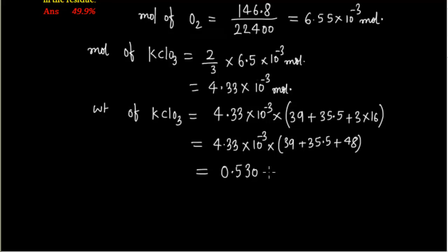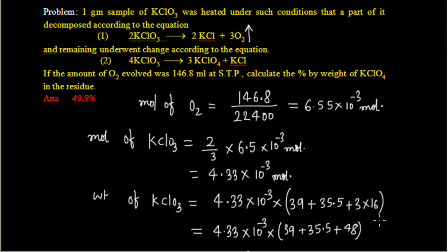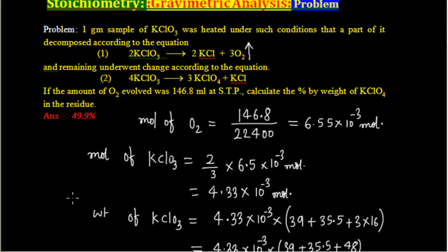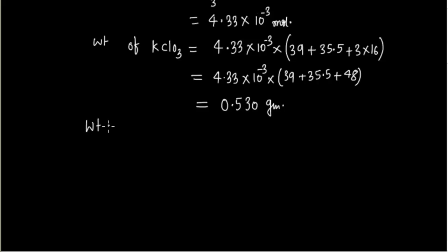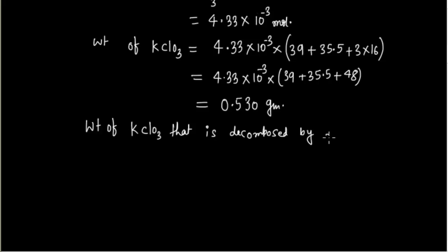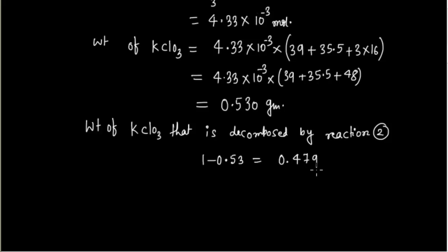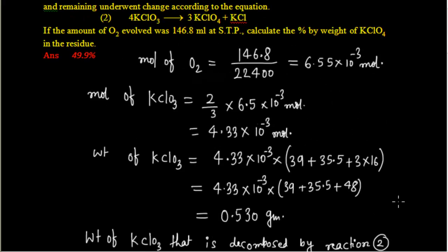So 0.530 g is the weight of KClO₃ that went through the first reaction. For the second reaction, the weight of KClO₃ decomposed is 1 − 0.53 = 0.47 g.